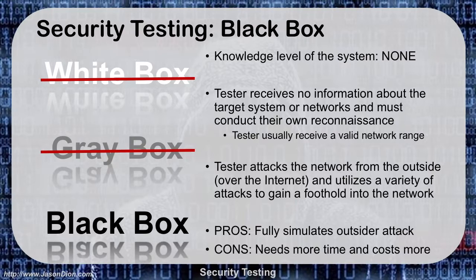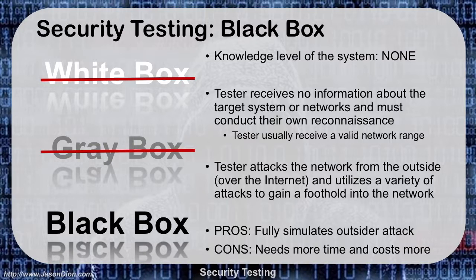Black box really fully simulates an outsider attack. It's as if an unknown hacker decided to come after your company with no knowledge of you and has to do all the reconnaissance themselves. About 80 to 90% of the upfront work is going to be open source intelligence, social engineering, and information gathering before you ever start the actual attack. You may use social engineering through spear phishing, regular phishing, or various exploits.